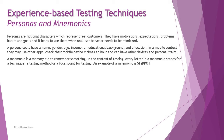Personas are fictional characters which represent real customers. They have motivations, expectations, problems, habits, and goals, and they help when real user behavior needs to be mimicked. A persona could have a name, gender, age, income, educational background, and even a location. In a mobile context, they may use other apps, check their mobile device a number of times, and can have other device and personal traits.